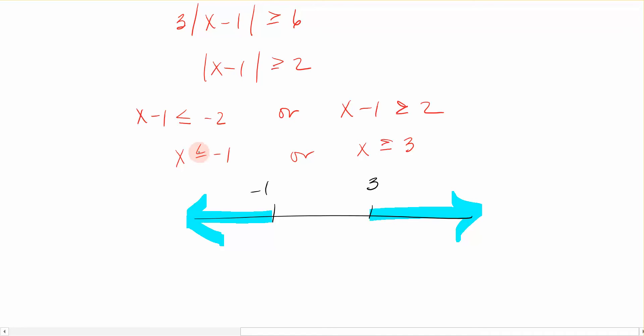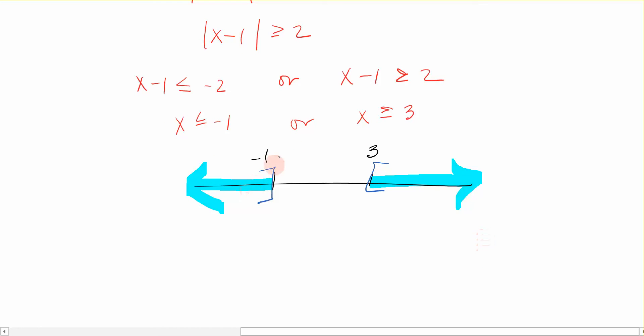Now, because this is less than or equal to, I'm going to put a bracket, and this is greater than or equal to, and I put a bracket in the opposite direction. So you can see that my solution says it's going to be less than this, or it's going to be greater than this.